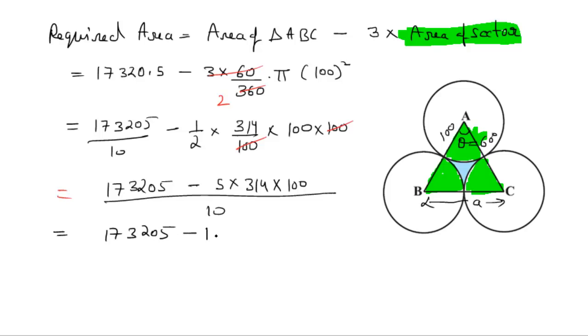Calculating: 17320.5 minus 1570 equals 15750.5. So we get 16205 upon 10, which equals 1620.5 cm². This is the final answer.